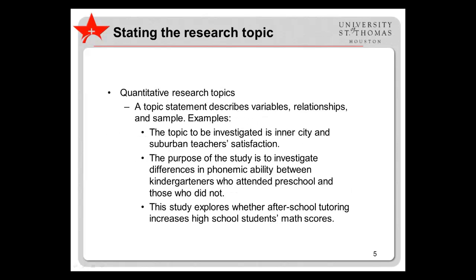The research topic should be stated clearly. In quantitative research, this statement should describe the variables of interest — that is, what you are focusing on — any relationships among the variables, and a few aspects of the sample. For example: the topic to be investigated is inner-city and suburban teacher satisfaction. The purpose of the study is to investigate differences in phonemic ability between kindergarteners who attended preschool and those who did not. This study explores whether after-school tutoring increases high school students' math scores.